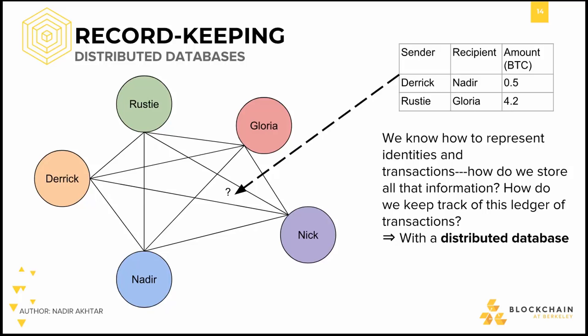So what does this distributed database look like, and where exactly is it stored? There is no central entity to hold onto our information, so the closest thing is having a chosen set of entities hold onto this history. If we assign several entities in this network the responsibility of maintaining and sharing our ledger of transactions, we are still seeing some parts of centralization sneak their way into our protocol, because we don't have to trust these maintainers — this goes against Bitcoin's aim to be a trustless system. So we must find another way.